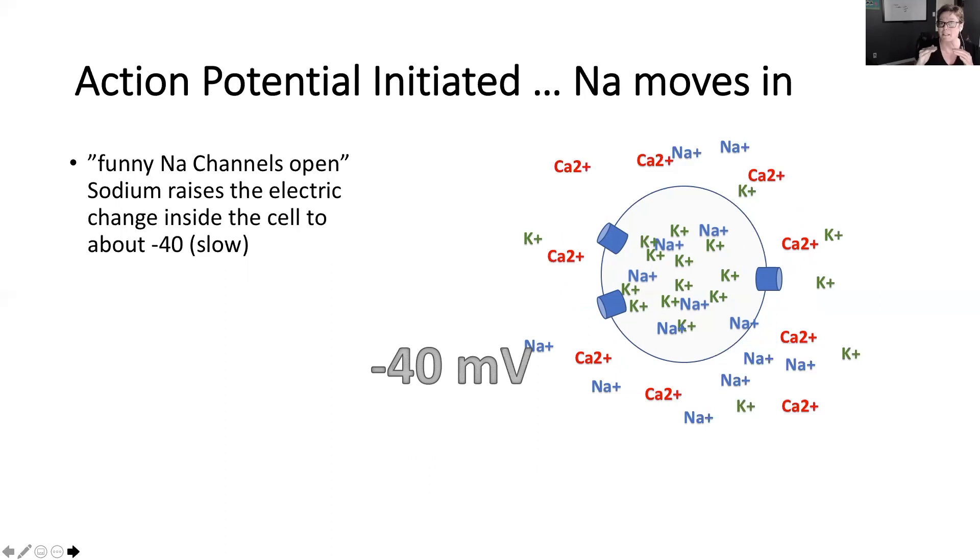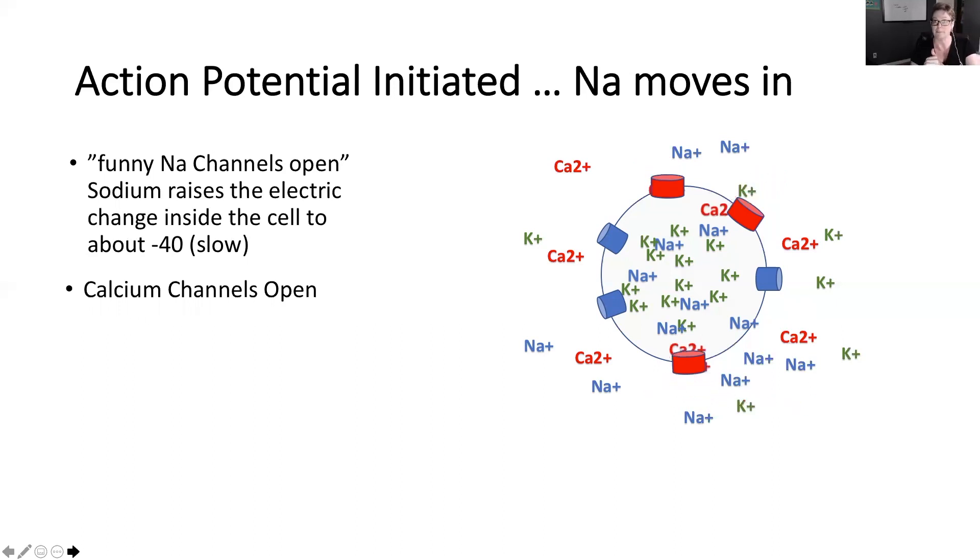Once we hit to that minus 40, it kicks into another element of this action potential chain, and that means that the calcium channels are going to open. Maybe in this case you found somebody who's going to match your donations, and so the calcium channels are also going to contribute. When they open, that calcium moves inside, so again we have more positive going inside. That causes a massive increase in the value to a positive 10 millivolts, and this is where the contraction actually occurs.